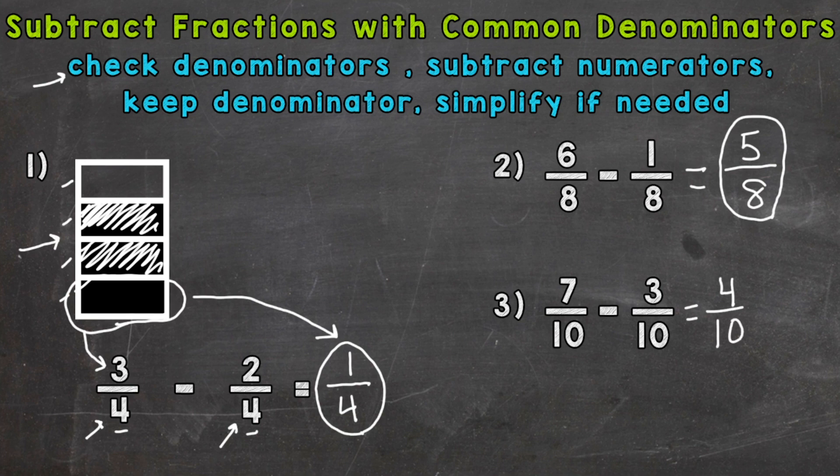When we simplify, we look for any common factors between the numerator and denominator, and here we have one. We can divide four and ten by two to break this down into lowest terms or simplest form. Four divided by two is two, and ten divided by two is five, so we get two fifths.